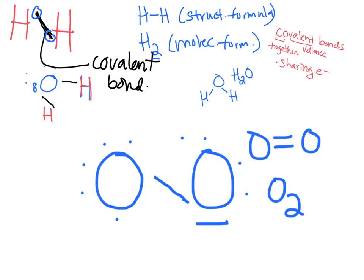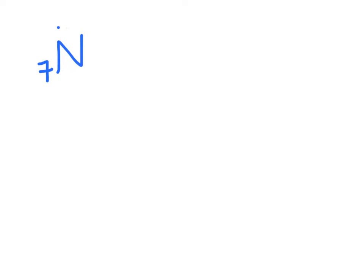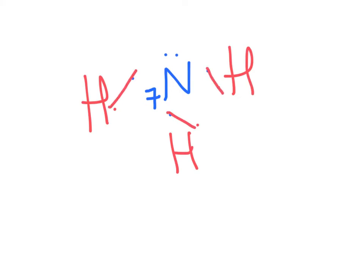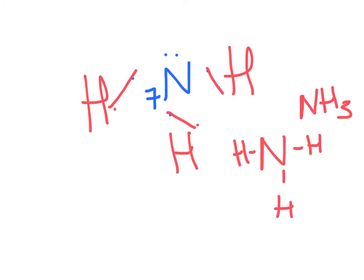Let's look at the other two elements in CHON. Nitrogen has an atomic number of seven—two in the first shell, five in the second—which means it needs to make three bonds. Taking three hydrogens in, nitrogen can share with each one. Now nitrogen has eight electrons on the outside and each hydrogen has two. This is NH3, the gas ammonia.